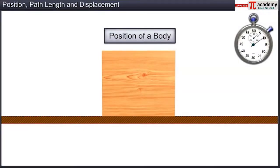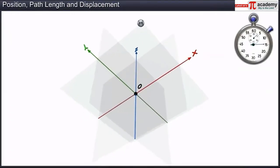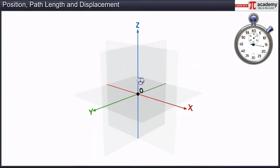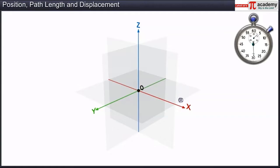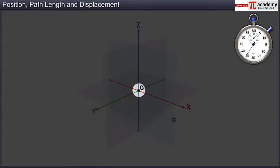Let us first understand what is meant by the position of a body. The position of a body in space is denoted by three coordinates: X, Y, and Z. The path length and displacement of a body depend on how its position changes with time. To specify the position of a body, we use a reference point.